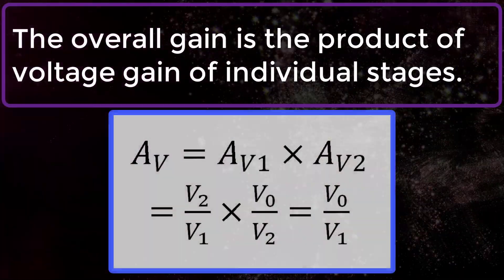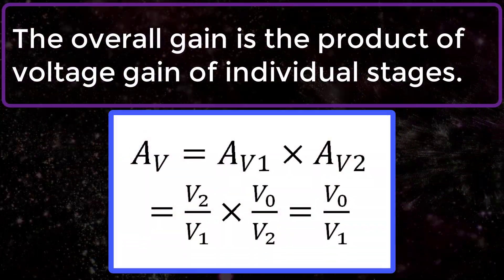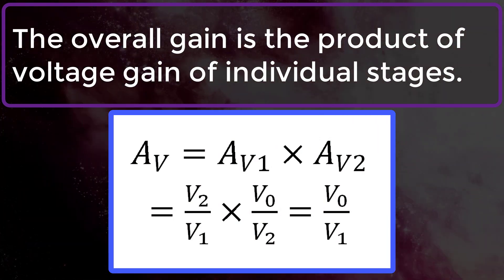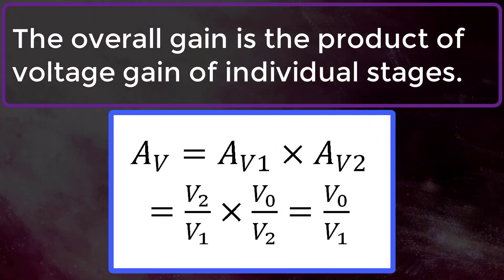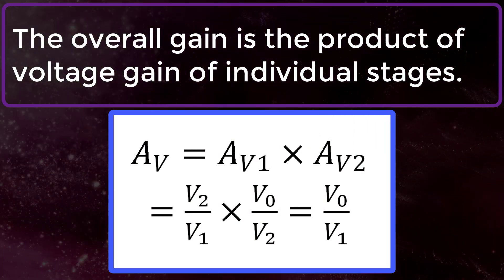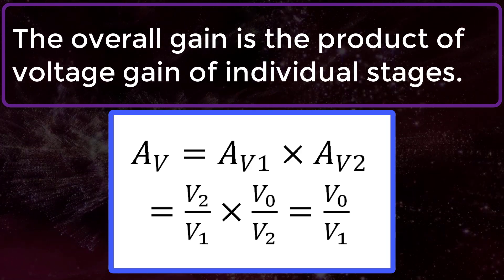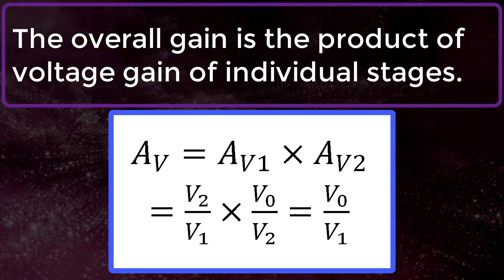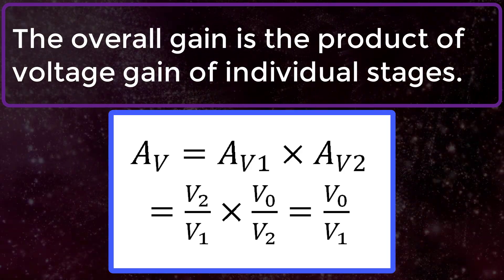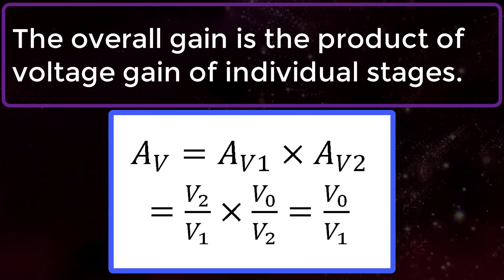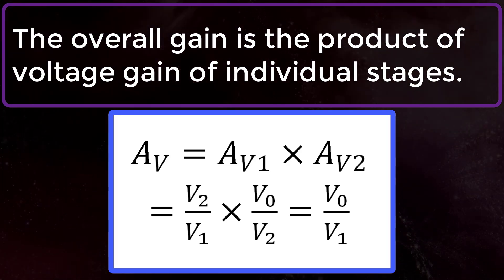The overall gain is the product of the voltage gain of individual stages. AV is equal to AV1 multiplied by AV2, which equals V2 by V1 multiplied by V0 by V2, which equals V0 by V1.